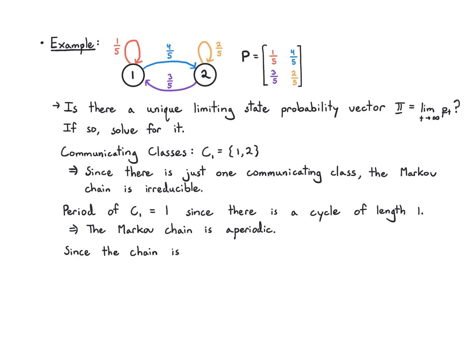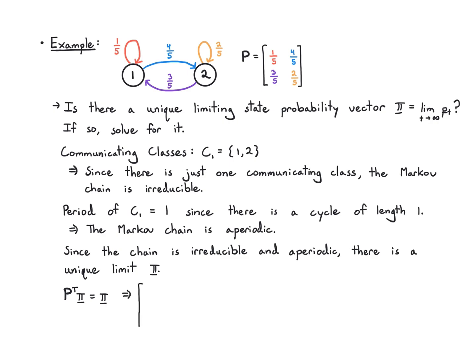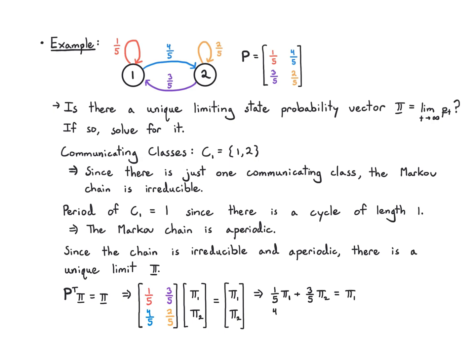Since the chain is irreducible and aperiodic, it has a unique limit pi. To solve for it, I write the steady-state equation by taking the transpose of the transition matrix times the entries pi_1 and pi_2 — the long-term probabilities of the states — and that has to equal (pi_1, pi_2), because once we settle into this limit it stays in that distribution forever. From this I get two equations: (1/5)pi_1 + (3/5)pi_2 = pi_1, and (4/5)pi_1 + (2/5)pi_2 = pi_2.